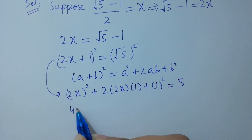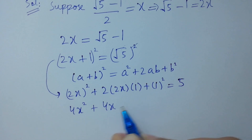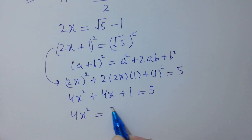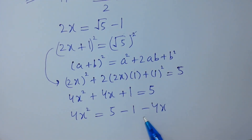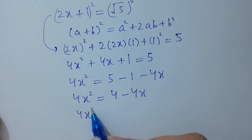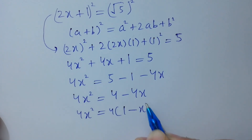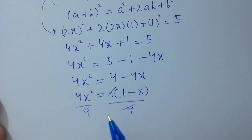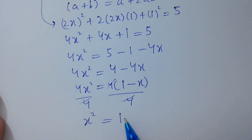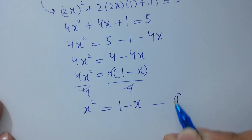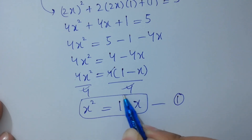Expanding: (2x plus 1) squared gives 4x squared plus 4x plus 1 equals 5. So 4x squared equals 5 minus 1 minus 4x, which is 4 minus 4x. Taking 4 as common and dividing both sides by 4, the 4's cancel and we get x squared equals 1 minus x. Let's call this our first equation.